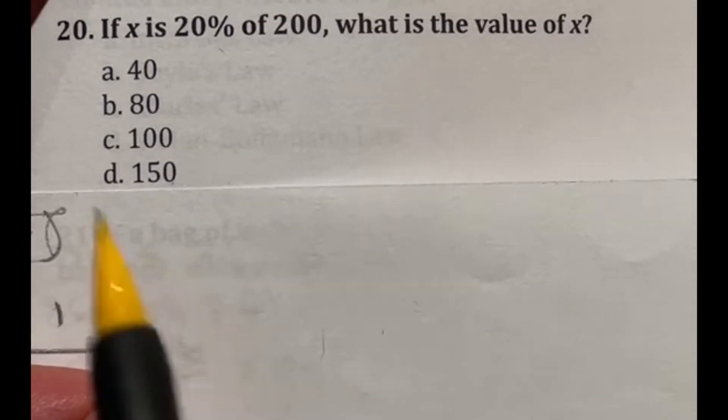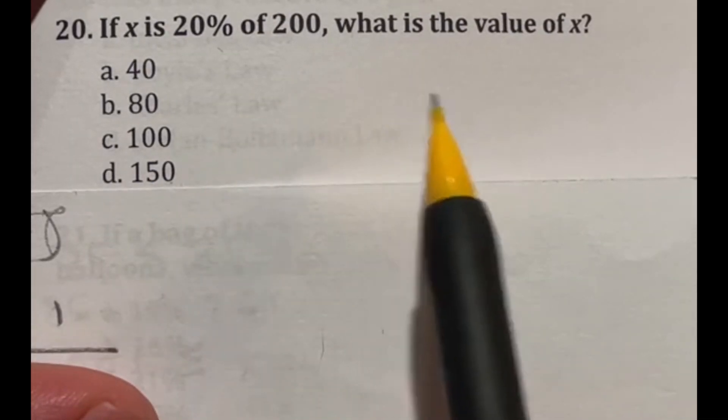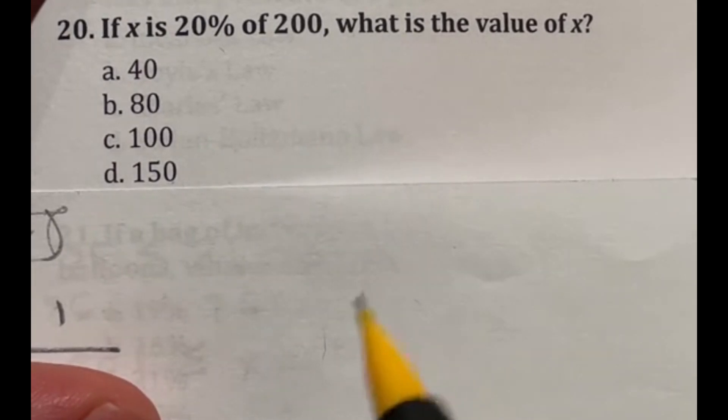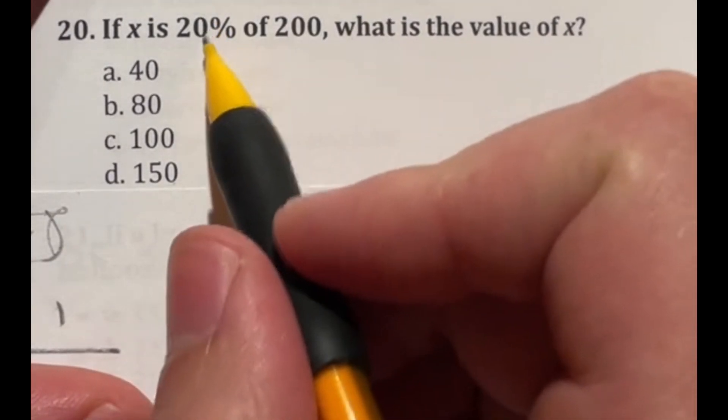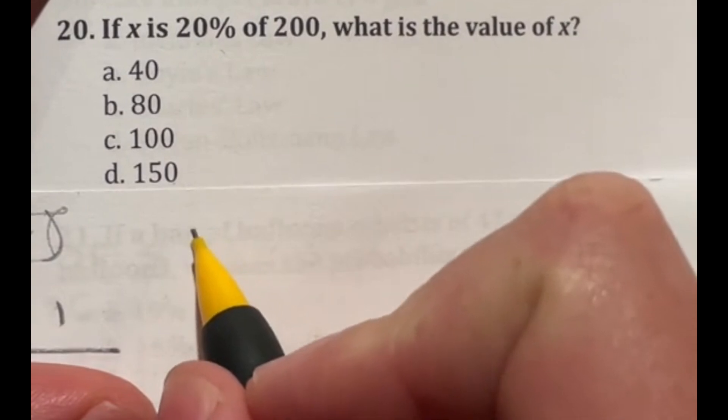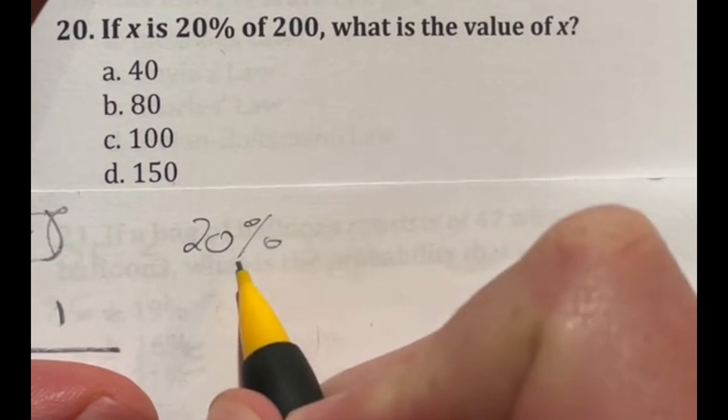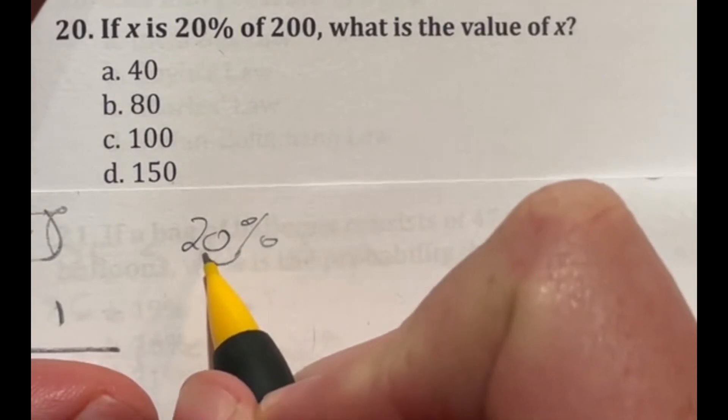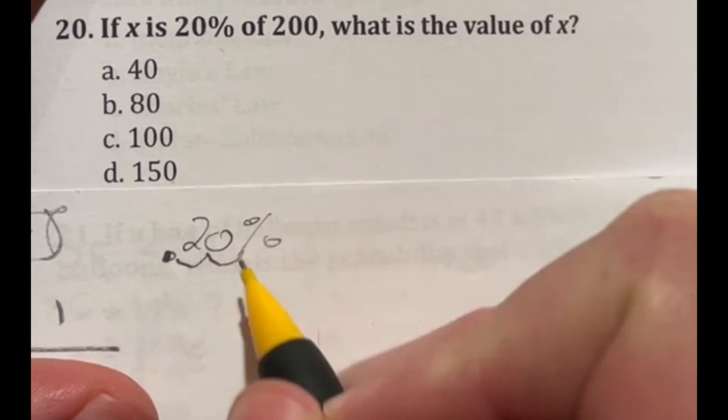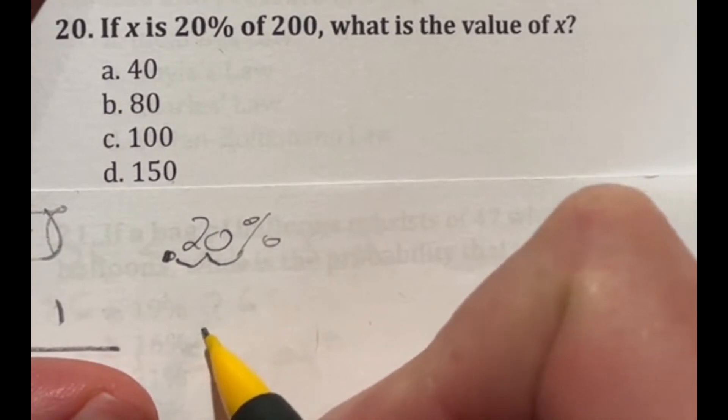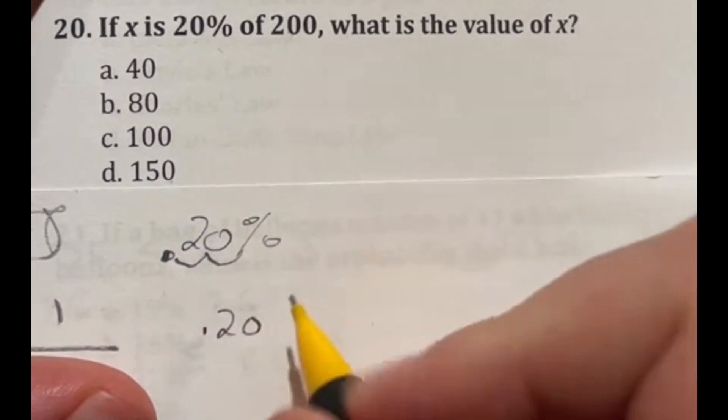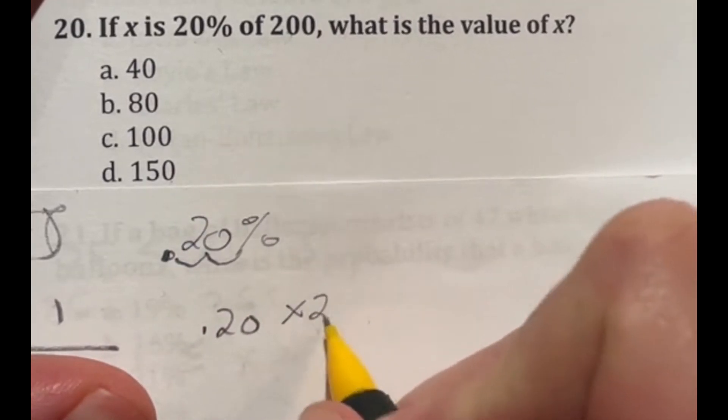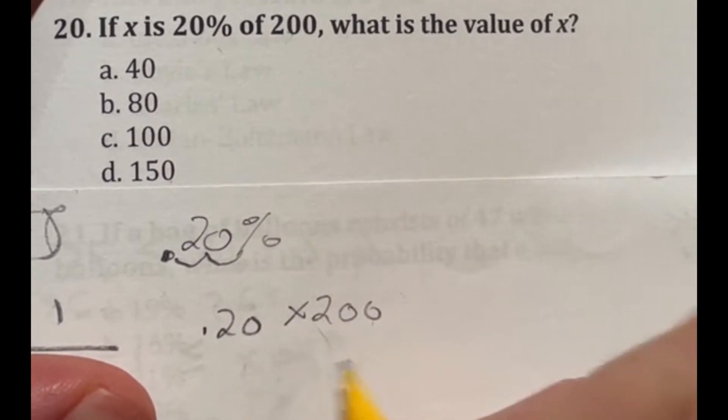Number 20 says if x is 20% of 200, what is the value of x? So how do you find the percent of a number? Well, the way you find a percent of a number is you take the decimal form of that percent. So in this case, 20% - we move the decimal point two times to the left. And that gives you the decimal form of that percentage. So this would be 0.20. And you take that decimal form and you multiply it by the whole. So we're going to be multiplying it by 200. And once you do that, that will tell you 20% of the 200.